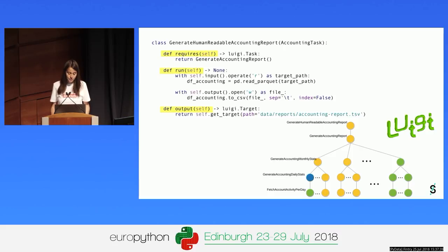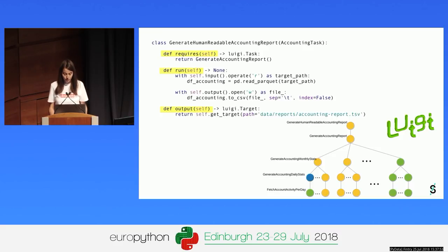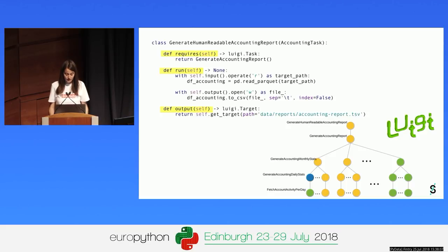This graph is a simplification of the dependency graph generated by the Luigi central scheduler. The node at the top represents the task that we trigger — in this case, generate human-readable accounting report. Below it, you can see all the levels of dependencies. Generate human-readable accounting report depends on generate accounting report, which in turn depends on many generate accounting monthly stats tasks. The color of the nodes indicates the task status: yellow means pending, blue means running, and green means completed.